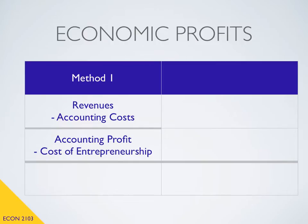However, I want you to notice that the computation of accounting profit considered only the value of our land, labor, and capital — three of our four resources. It did not consider the cost of our entrepreneurship, that fourth most important resource identified previously in this lesson.